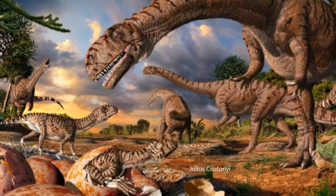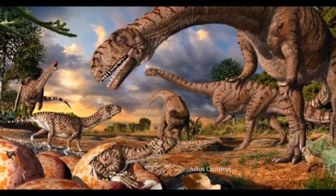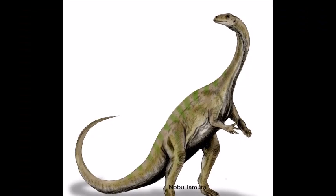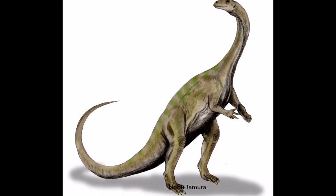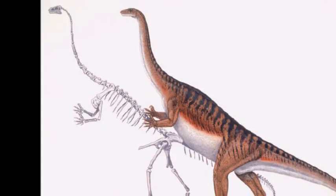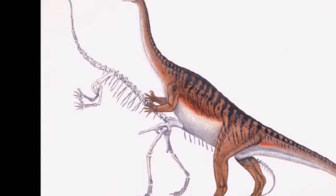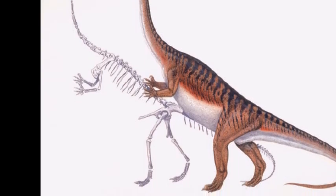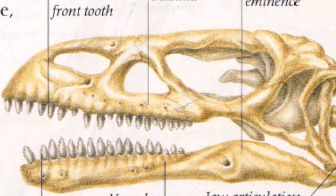A nest of fossilized dinosaur eggs has also been assigned to the Massospondylus genus. Massospondylus had an elongated skeleton and a relatively small head, shallow ribcage and more slender limbs compared to more robust prosauropods such as Platyosaurus and Lufengosaurus. It is possible that it represents an evolutionary stage intermediate between more archaic species such as Anchosaurus and the larger and more robust forms.